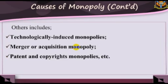5. Merger or acquisition monopolies. The merger of smaller firms to form a single formidable firm could lead to a monopoly situation. Also, a relatively larger firm may acquire smaller firms and hence form a monopoly. 6. Patent and copyright monopolies. A patent confers a monopoly right to the exclusive use of an invention. For the work of art and literature, copyrights may be issued to prevent the original innovator from being copied.